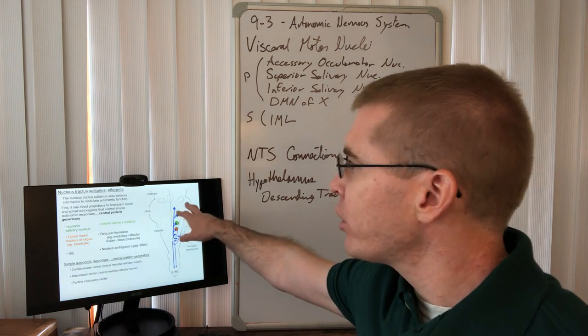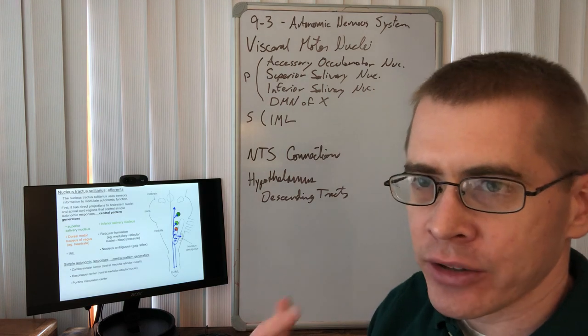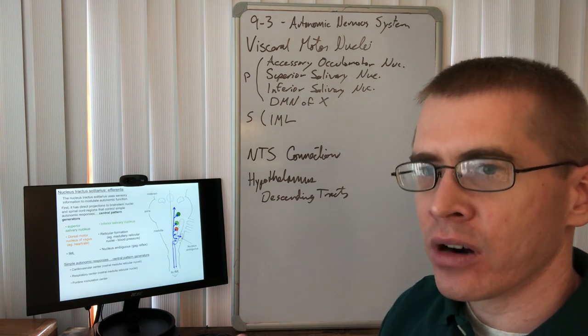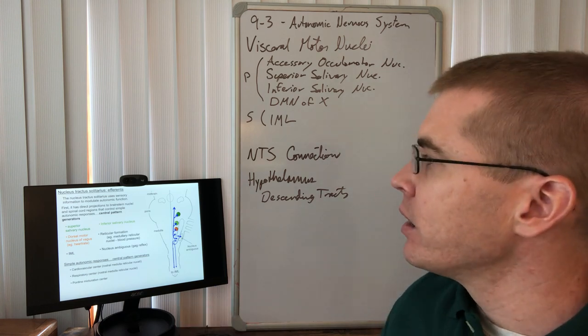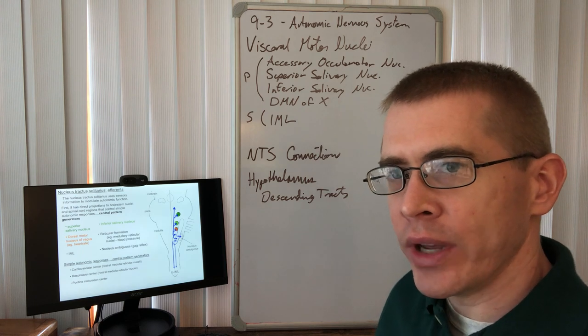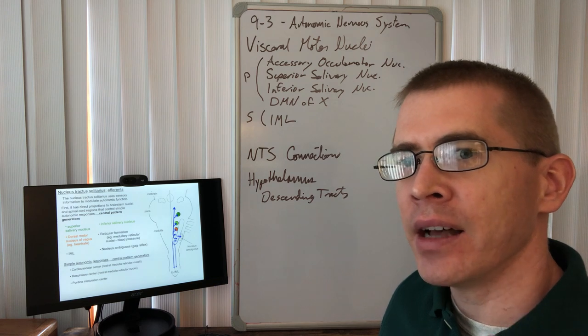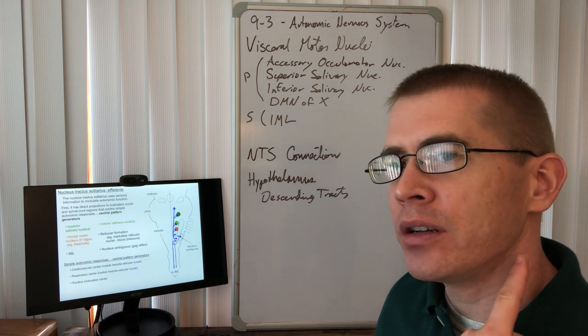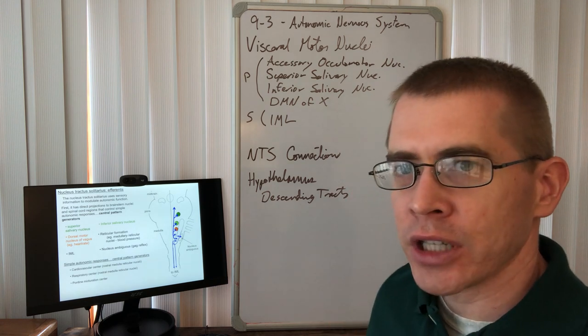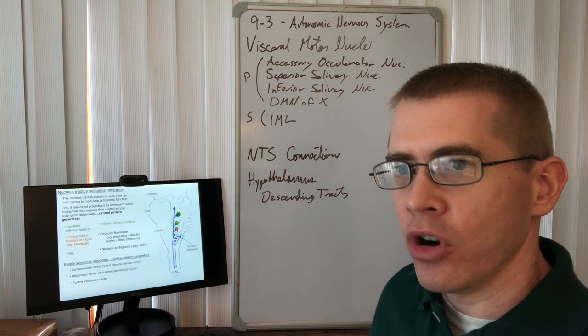These will also have collaterals that synapse on what are called central pattern generators. Central pattern generators regulate things like our breathing rate and our heart rate and things like that. In so doing, they can respond to internal changes like changes in blood pressure or oxygen, carbon dioxide content via the carotid body, carotid sinus, to regulate our respiratory rate and to bring us back into homeostasis.